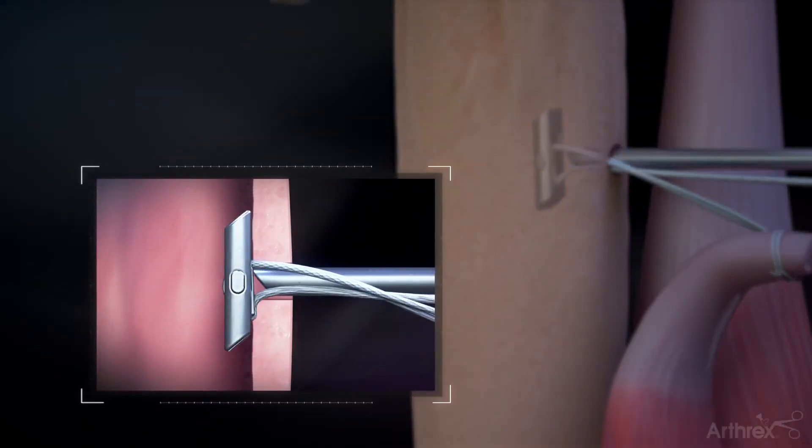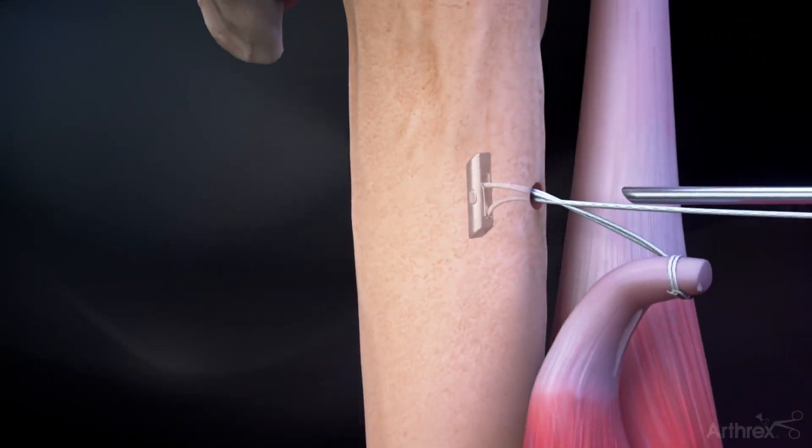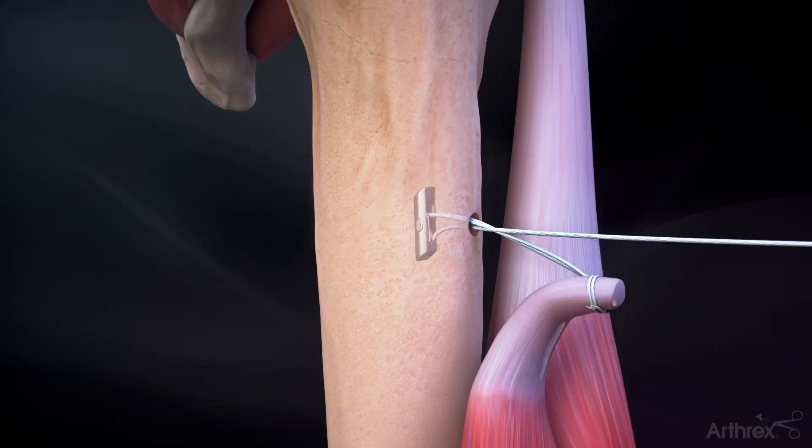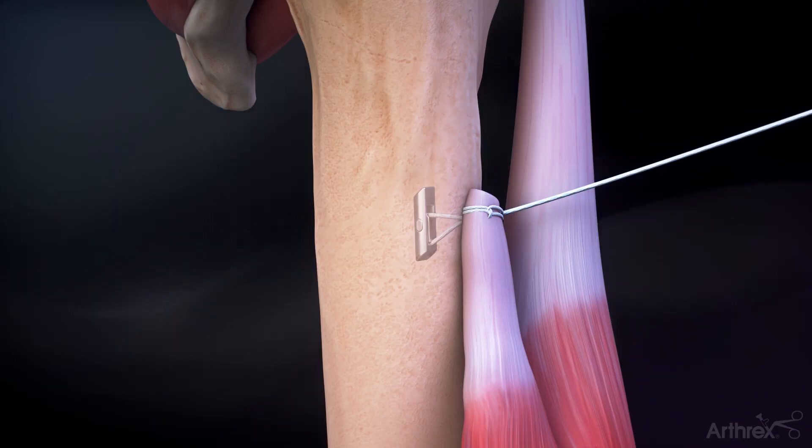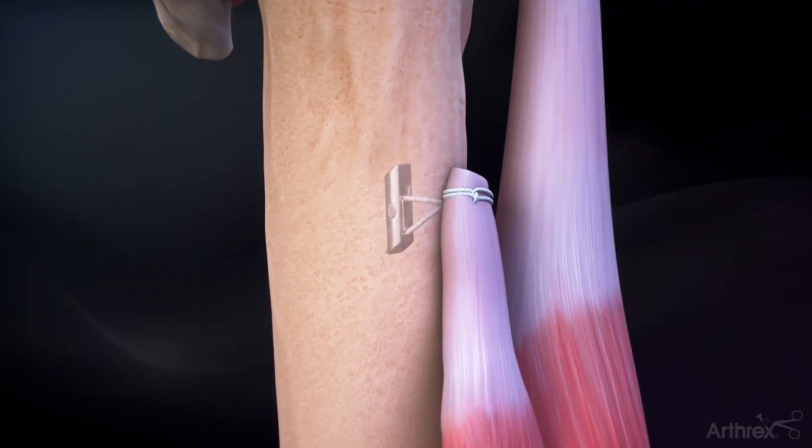Pull on the suture to flip the button in the canal. Remove the inserter shaft once the button is deployed against the near cortex. Pull on the free suture limb to reduce the tendon onto the bone. Cut the excess suture to complete the tenodesis.